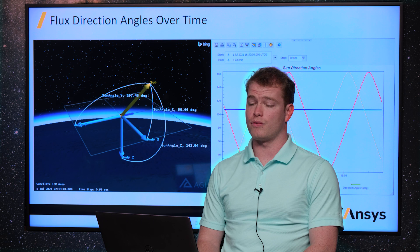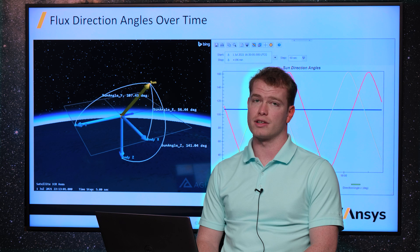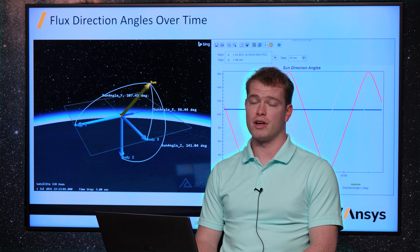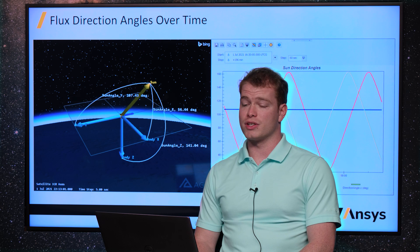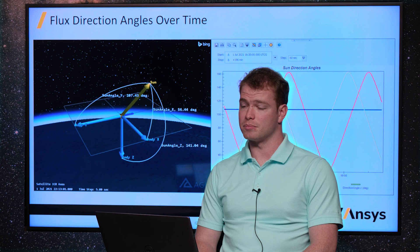As I spoke about earlier, we can also find the exact direction angles from these flux sources. This screenshot shows just the direction angles from the sun vector in the satellite body frame. However, we do the same exact process for also the albedo and Earth's natural infrared radiation. On the right you can see a graph of these angles over time. Again, with this inclined orbit that goes over the poles, we can see how this varies periodically.